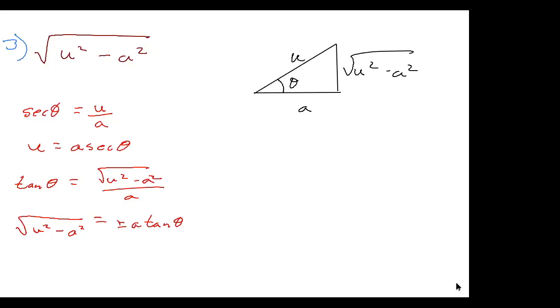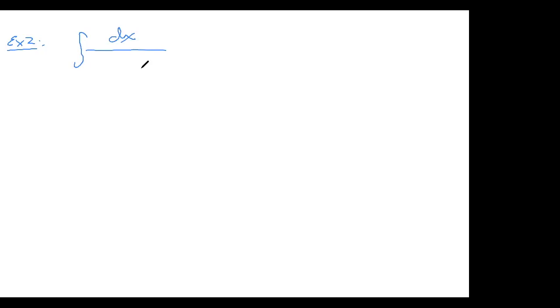Let's look at more examples using the idea that the integrand tells us which of the three substitutions to use. Example 2: the integral is dx over √(4x²+1). Since there's a positive sign inside the radical, there's only one substitution that applies — the tangent substitution with the a²+u² triangle.